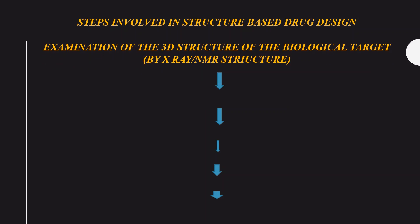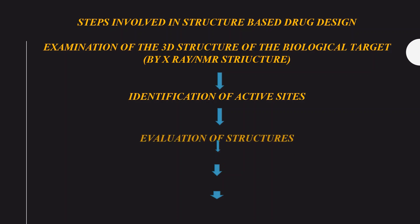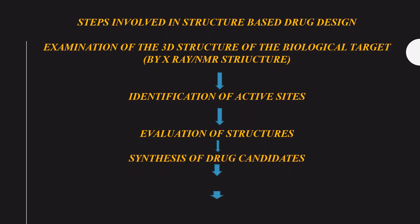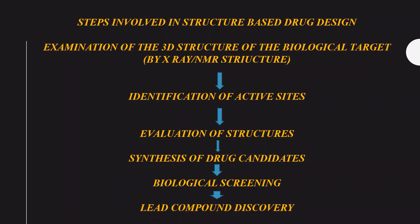The first step in structure-based drug design is examination of the 3D structure of the biological target using X-ray crystallography and NMR spectroscopy. Then we identify the active sites in the receptor — where the drug binds. Then we evaluate the particular structures, look at the synthesis of drug candidates, which are the ligands to be modified. Finally, we identify the lead compound: when the drug and receptor bind, the lead has become our compound, and a lead compound is confirmed when it shows biological activity.